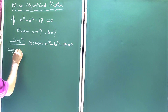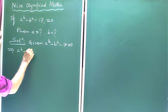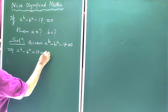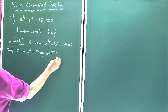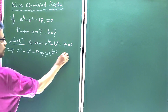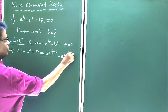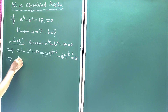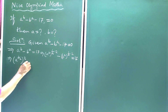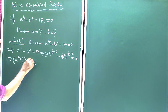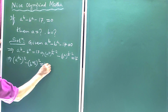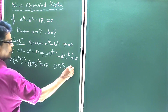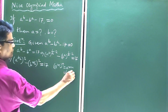This is the equation given. So we can write a to the power b minus b to the power a is equal to 17. This implies a to the power b by 2, whole squared, minus b to the power a by 2, whole squared, is equal to 17, because we know a to the power m to the power n equals a to the power m times n.